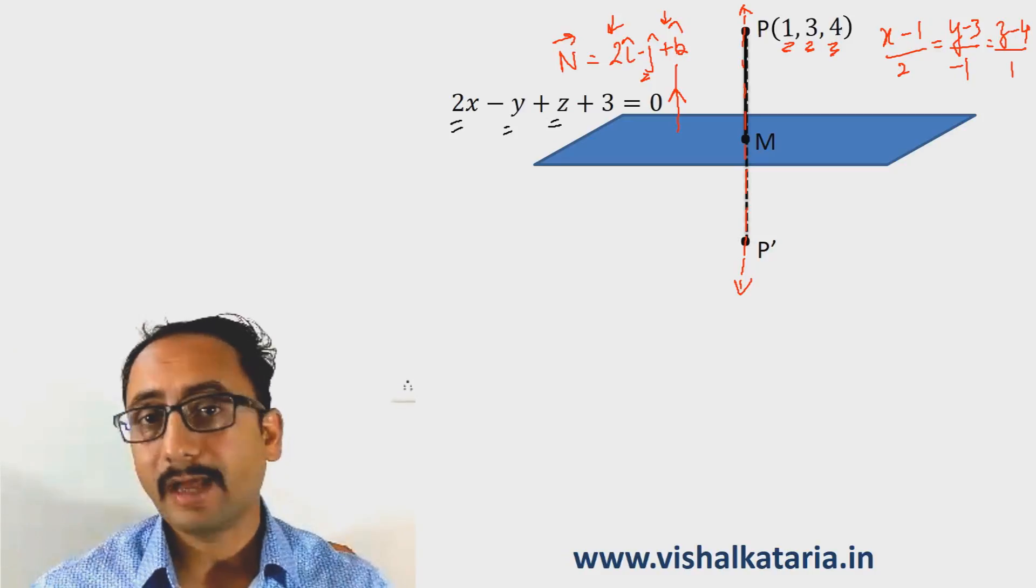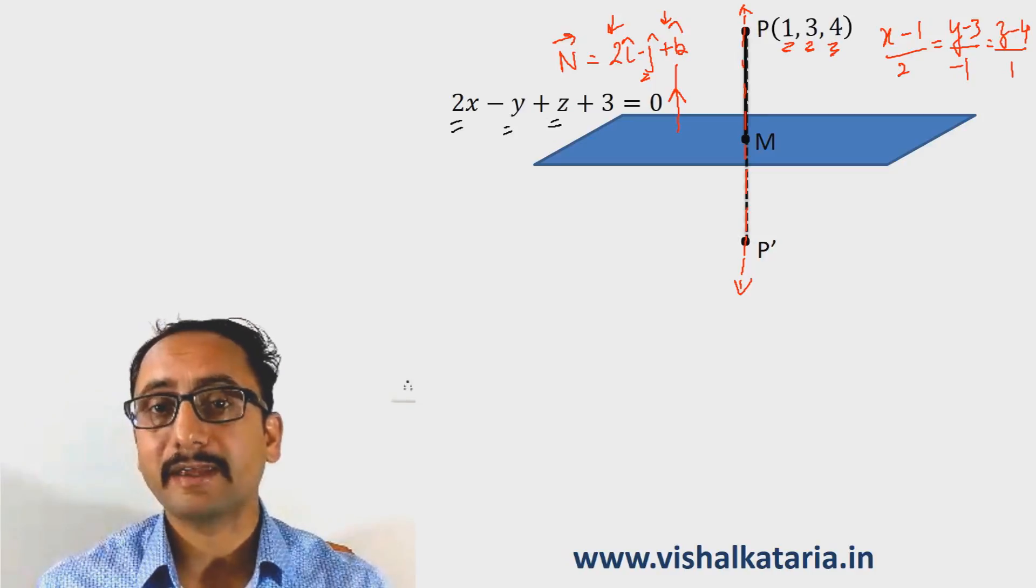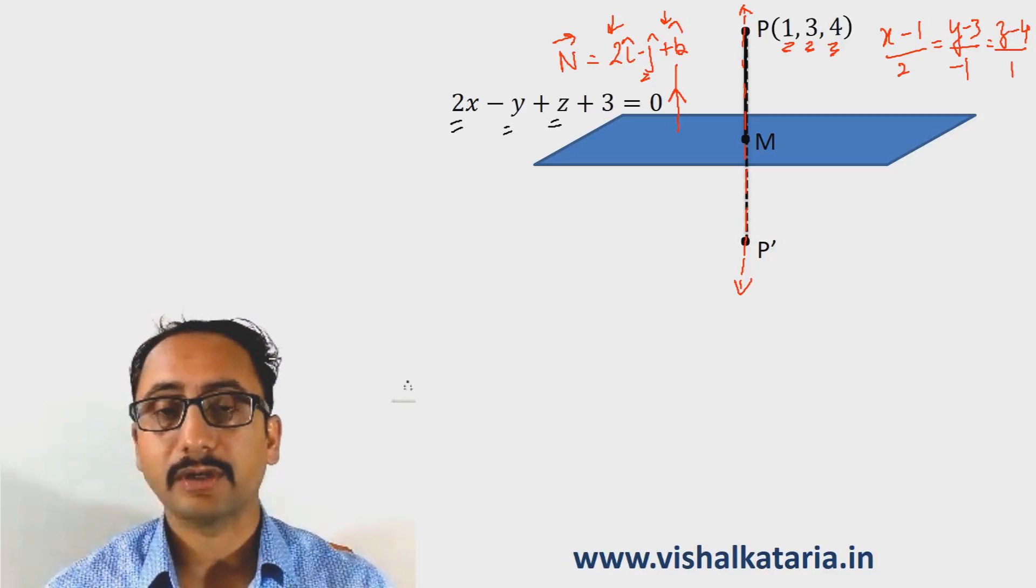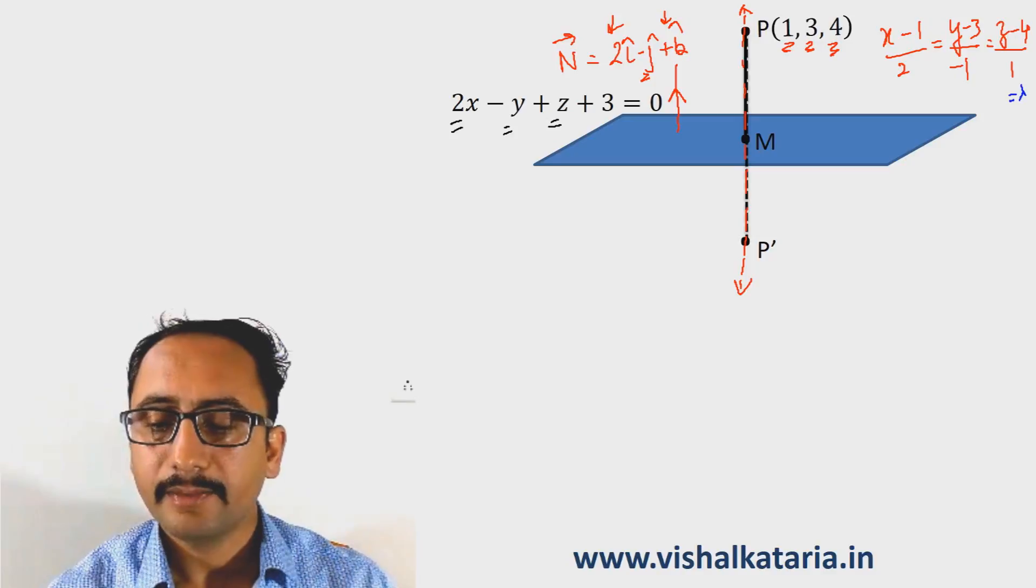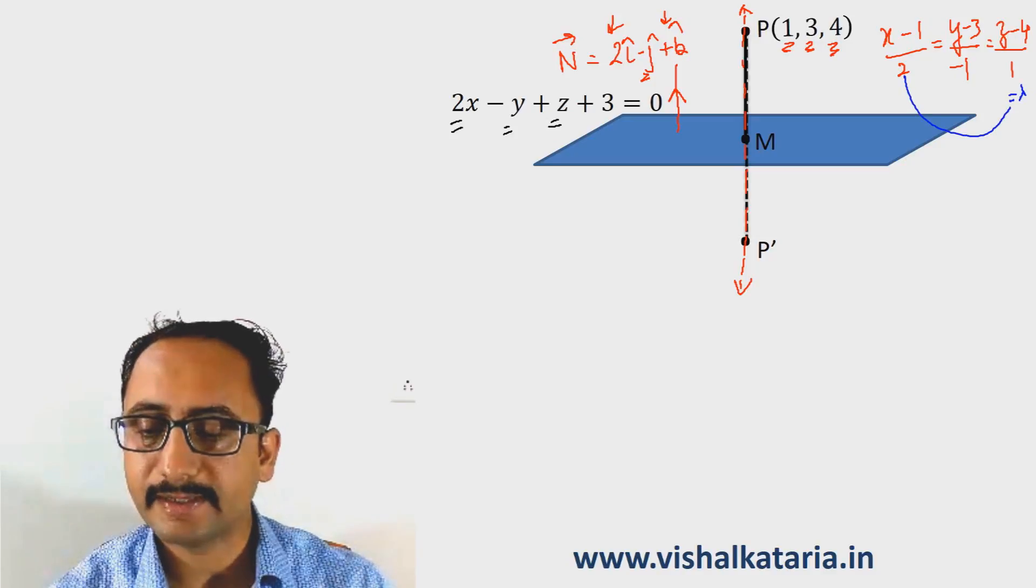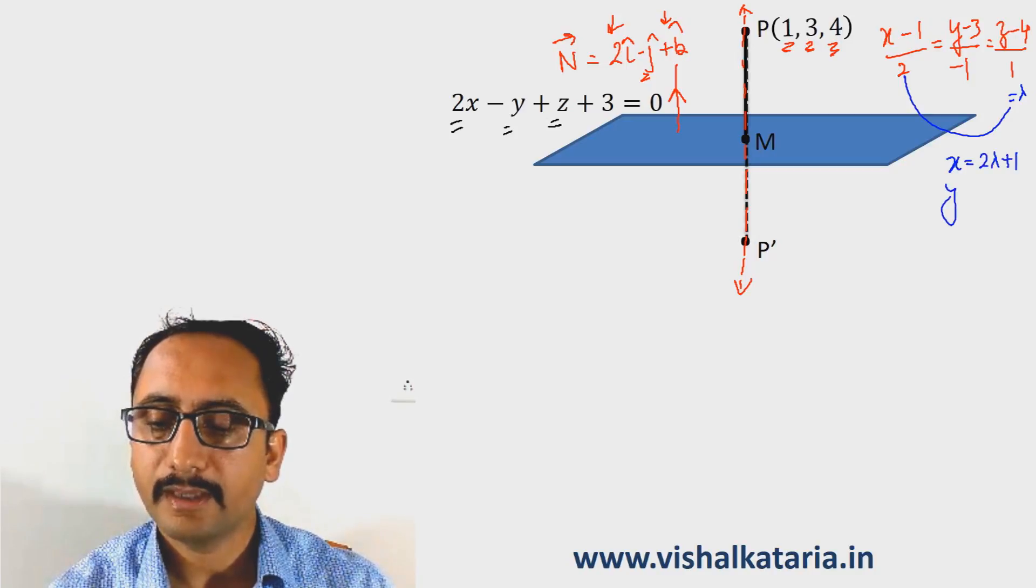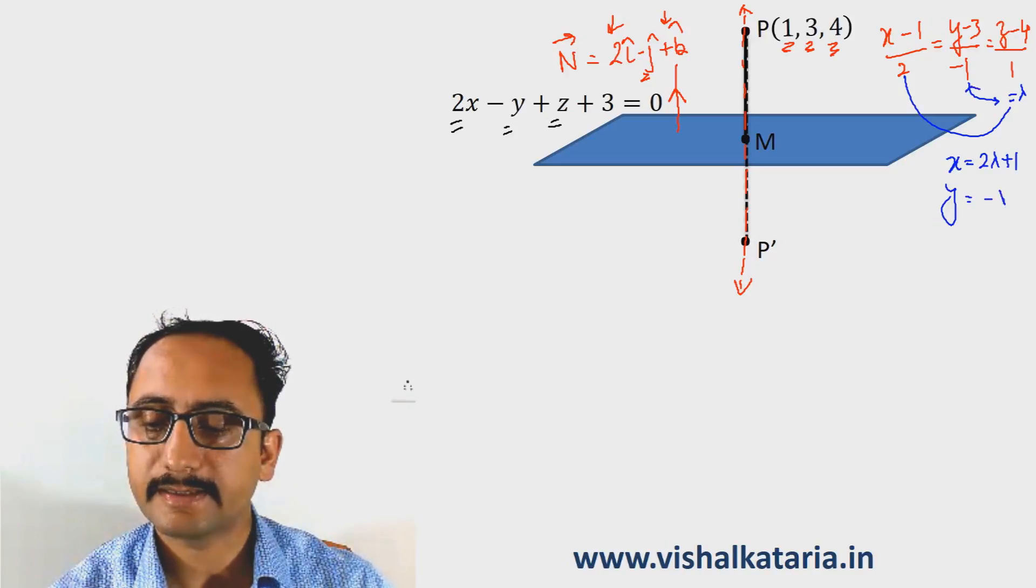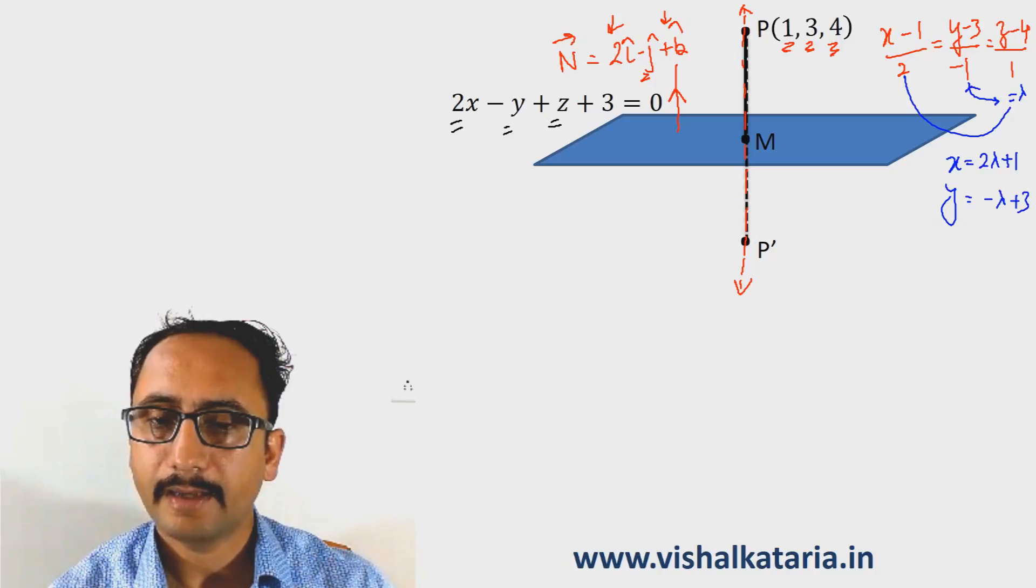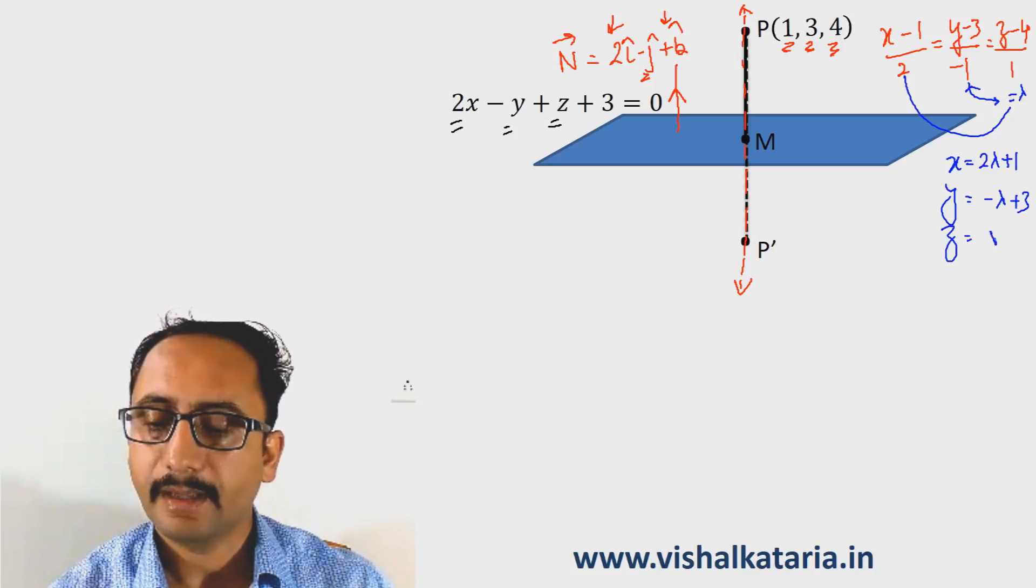Hence, M will also satisfy this equation. If we set this equal to λ, then M has coordinates of the form: x = 2λ + 1, y = -λ + 3, and z = λ + 4.